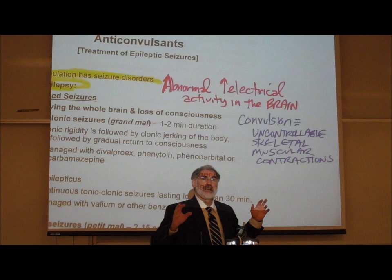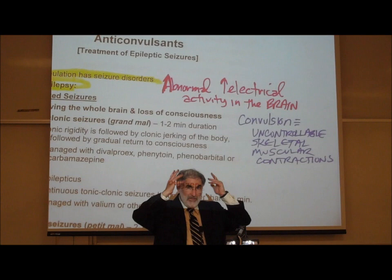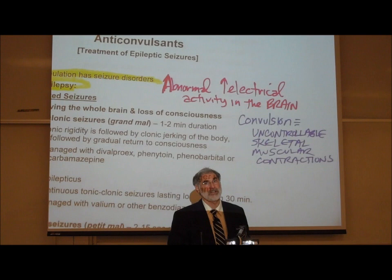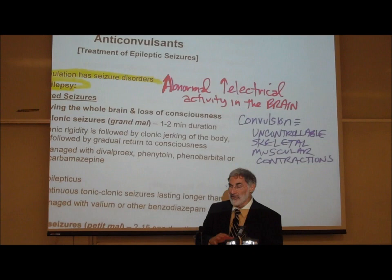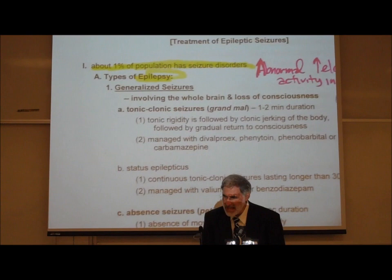Not everybody who has seizures has convulsions. Not everybody who has this abnormal electrical activity in the brain starts to have uncontrollable muscular contractions. Some do, some don't. And that, in part, is why there are different types of epilepsy or epileptic seizures.